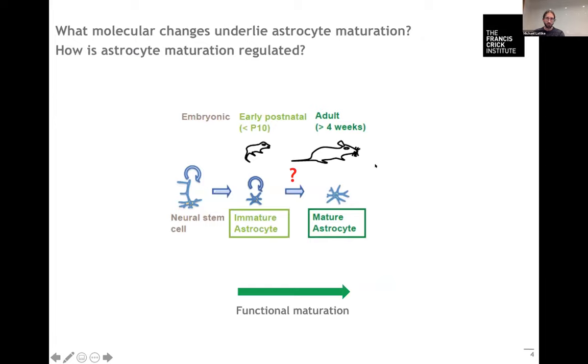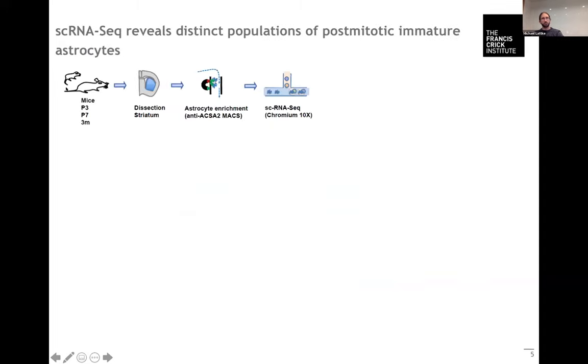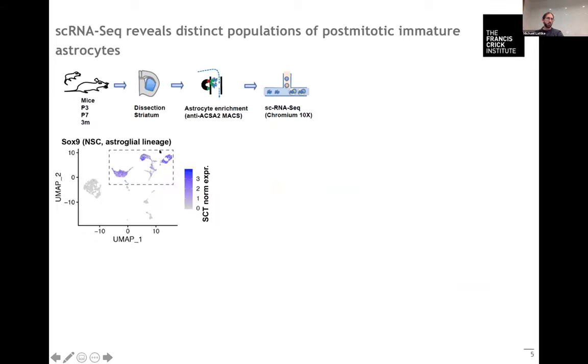What we wanted to find out is what molecular changes are occurring during this maturation process, which occurs in mouse between the early postnatal stages and the adult stage, and how these molecular changes are regulated. Initially, as there's not much known, we wanted to investigate in more detail the transcriptional changes during that process. For this we performed single-cell RNA sequencing of astrocytes purified from early postnatal and adult mouse brain.